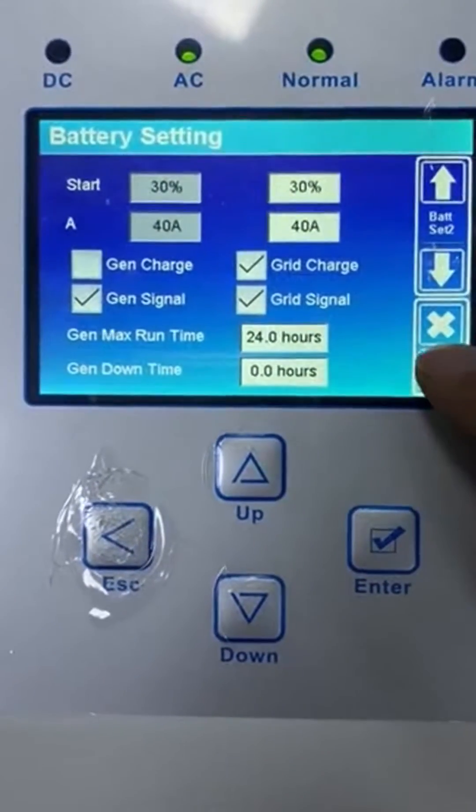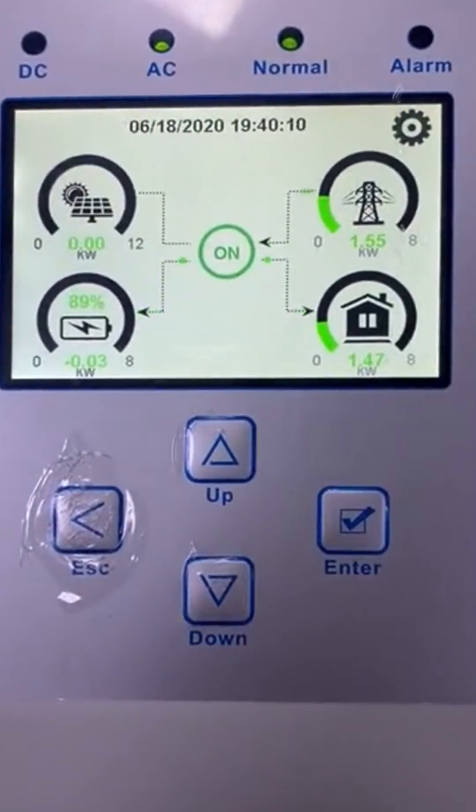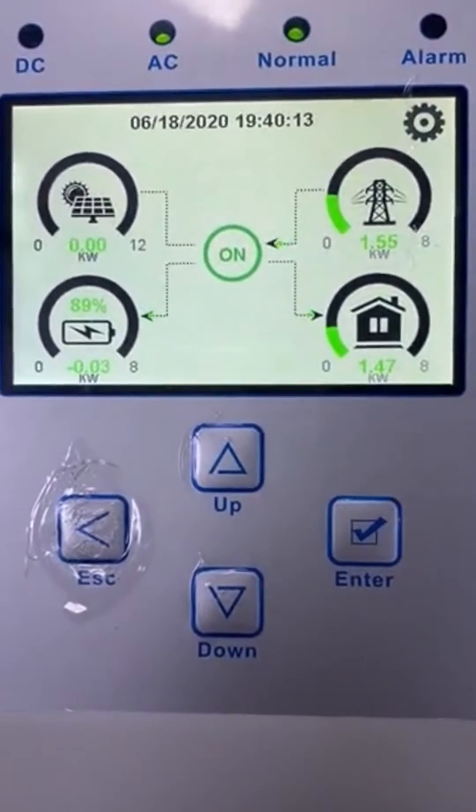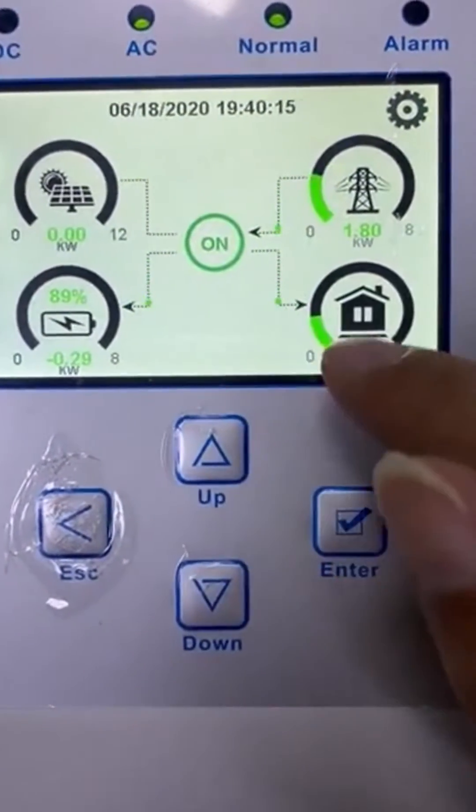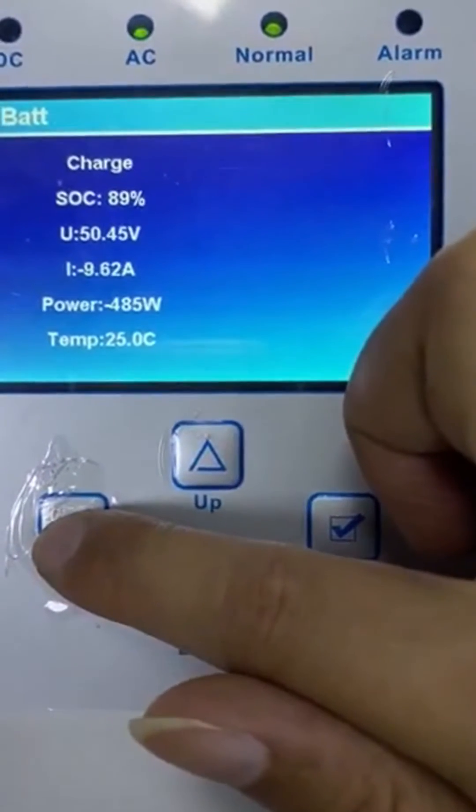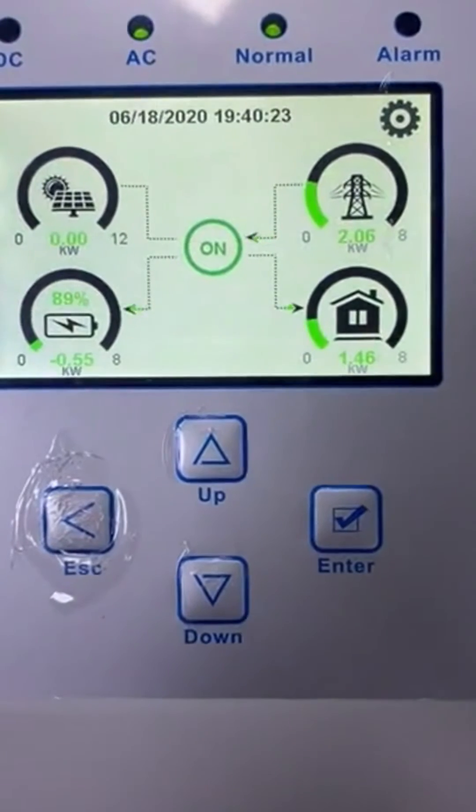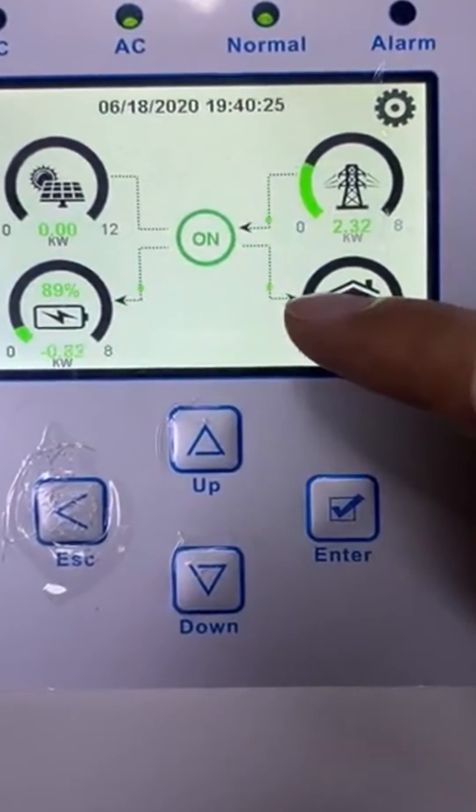Let's input here and press here. As we can see, the grid is now charging the battery. The charging power is increasing. Now it's around 500 watts, and it's still increasing.